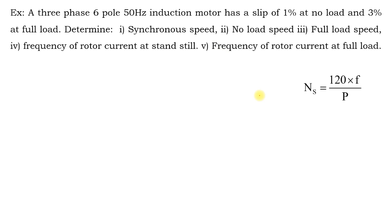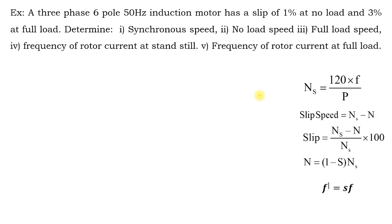To solve this problem these equations are sufficient. First, find synchronous speed: ns = 120 × f / P = 120 × 50 / 6 = 1000 rpm.